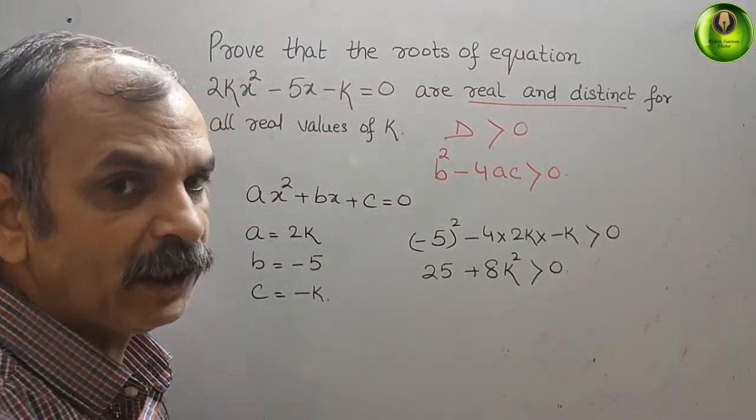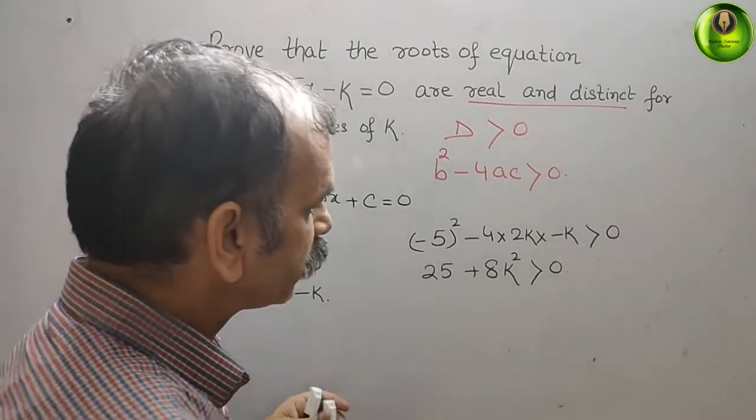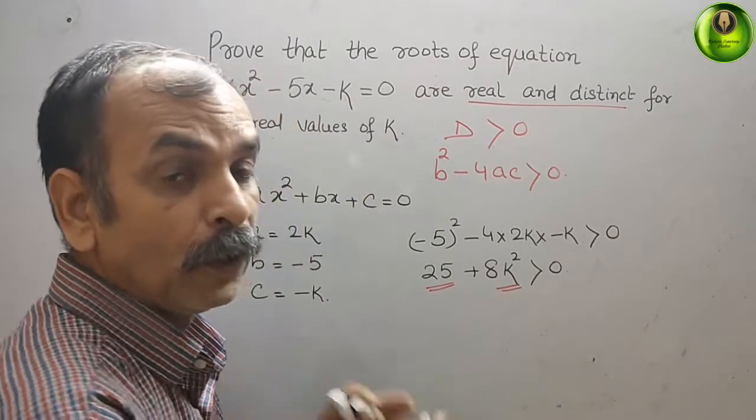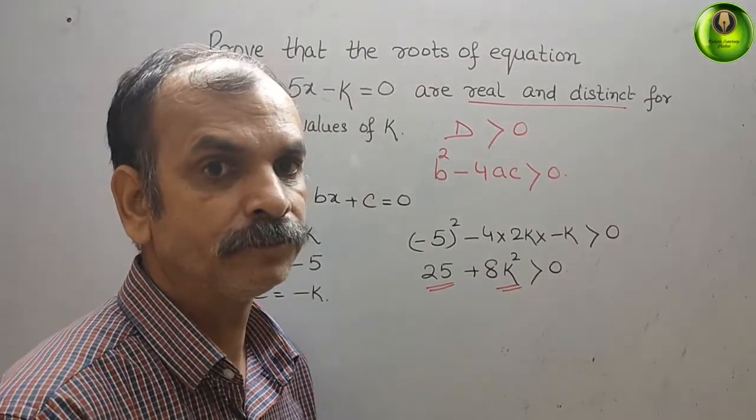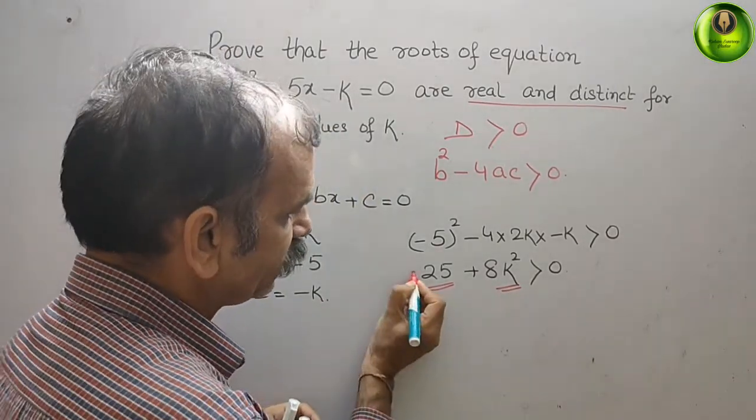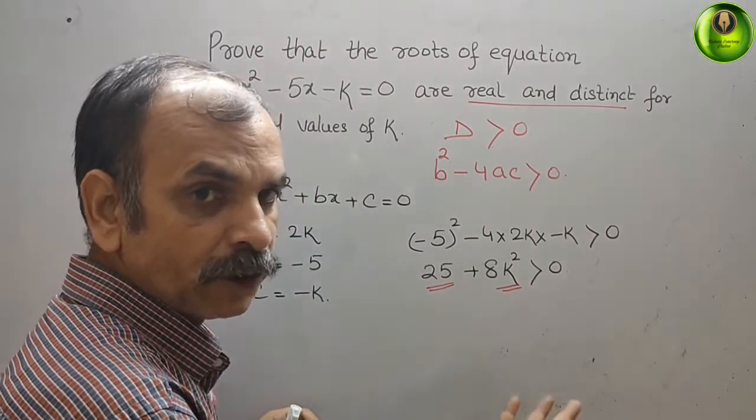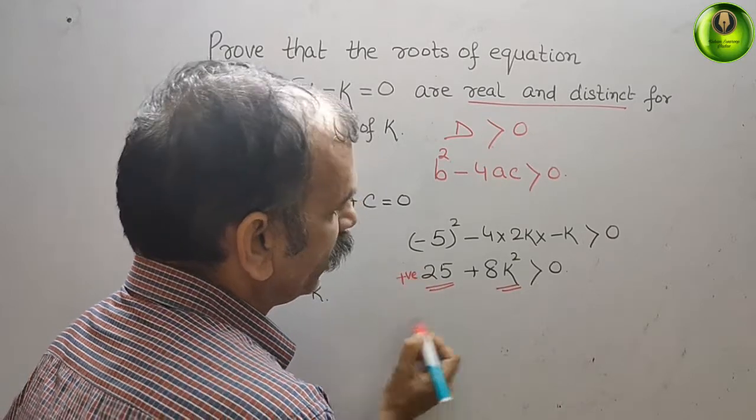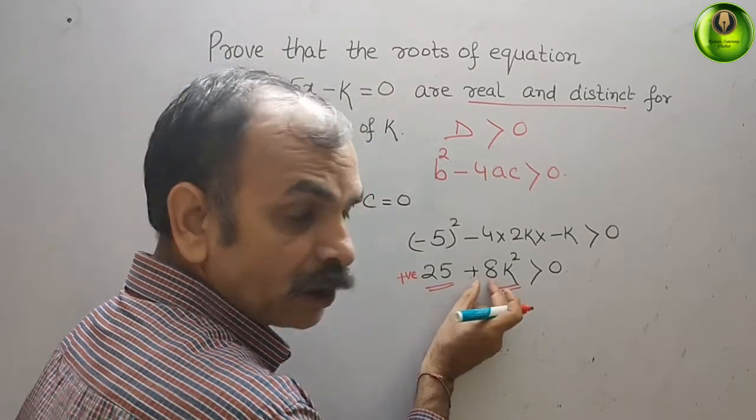Now, if you see, all the two terms, here one term, here is second term. Both are positive. You can see, here it is positive. 25 is positive. So we can say it is positive. And here, 8k² is positive.